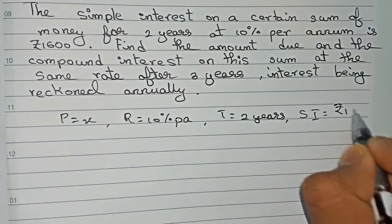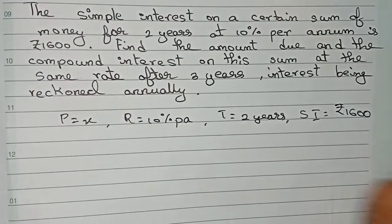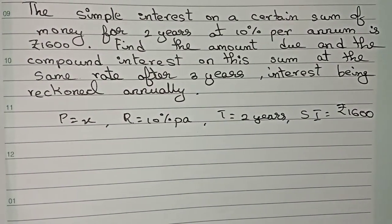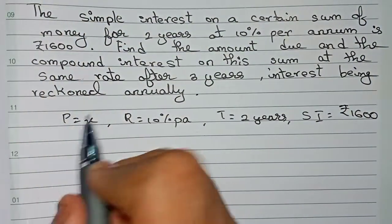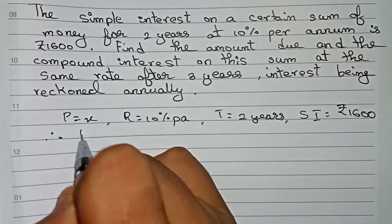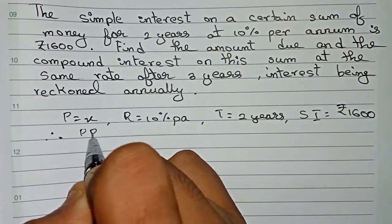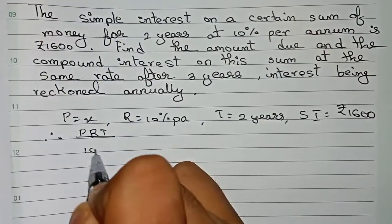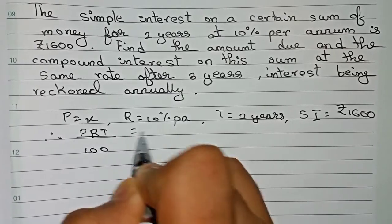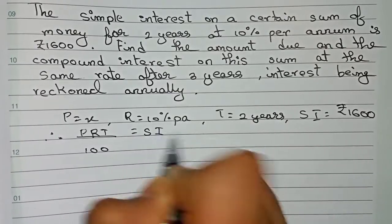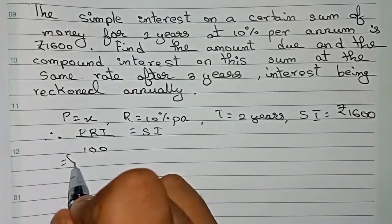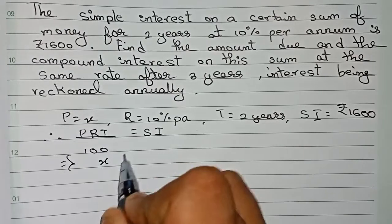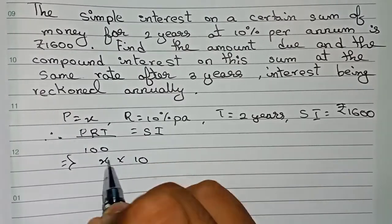The formula for simple interest is SI = PRT/100, that is principal multiplied by rate multiplied by time divided by 100. So we can write PRT/100 = SI. Now I put the values: x into 10% into time that is 2, divided by 100, is equal to SI that is 1,600.